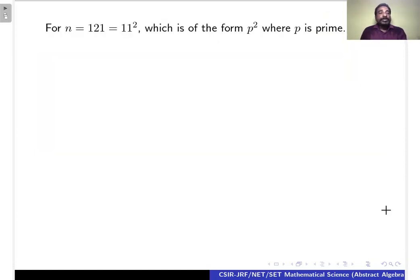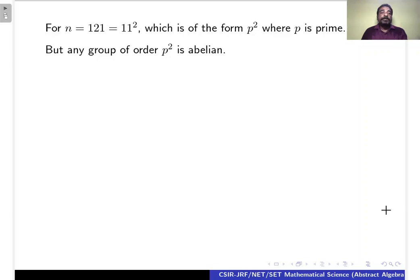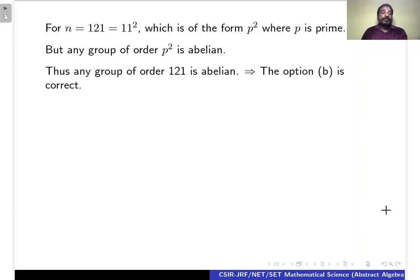When N = 121, which equals 11², which is of the form P² where P is prime, any group of order P² is abelian. Therefore, any group of order 121 is abelian. Therefore, the correct option is B.